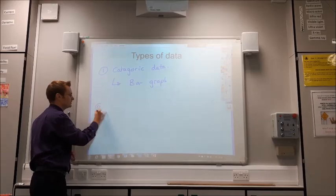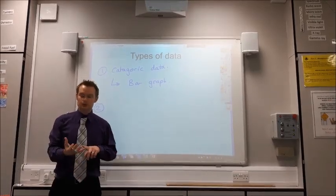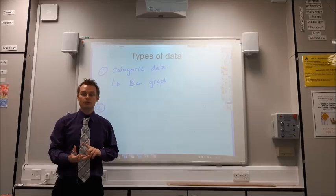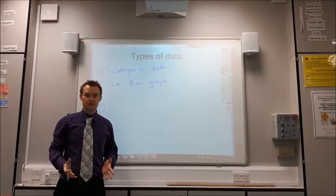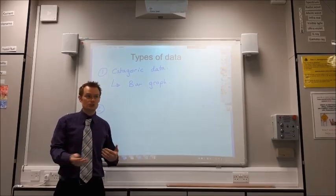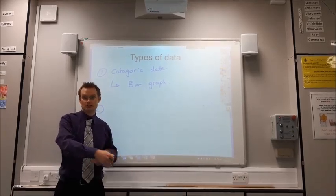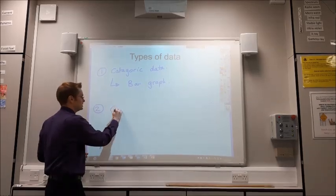The second type of data that you're most likely to come across is what's called continuous data. So, if you're dealing with temperature or if you are dealing with length, those can have any value. So, we say those are continuous because you could be 100cm, 100.5cm, or 200 million cm. It can have any value. So, that's continuous data.